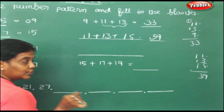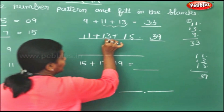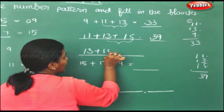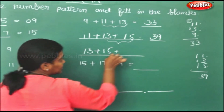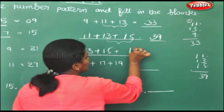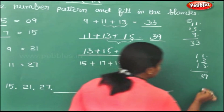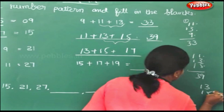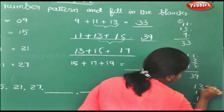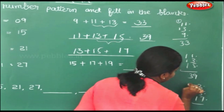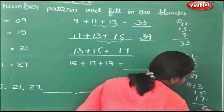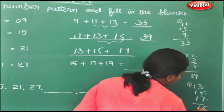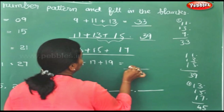Now, we will take up the last two odd numbers: 13 plus 15, and write the next odd number which is 17. Now we will sum this up: 13, 15, 17. That gives you 45.